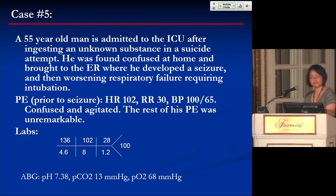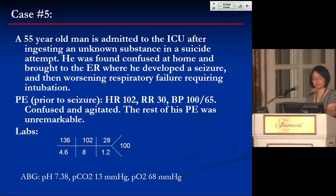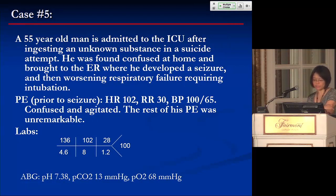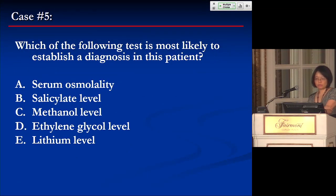Case five: a 55-year-old man admitted to the ICU after ingesting an unknown substance in a suicide attempt. He was found confused at home, developed a seizure, and worsening respiratory failure requiring intubation. Prior to seizure, he was tachycardic at 102, respiratory rate 30, blood pressure 100 over 65, confused and agitated. Labs: sodium 136, potassium 4.6, chloride 102, bicarb 8, BUN 28, creatinine 1.2, glucose 100. ABG: pH 7.34, PCO2 13, PO2 68. Which test is most likely to establish a diagnosis?